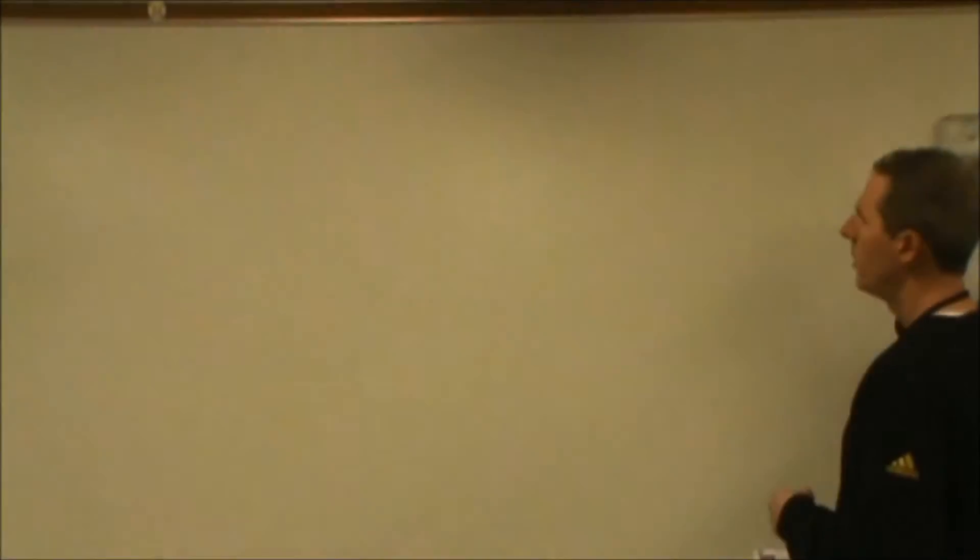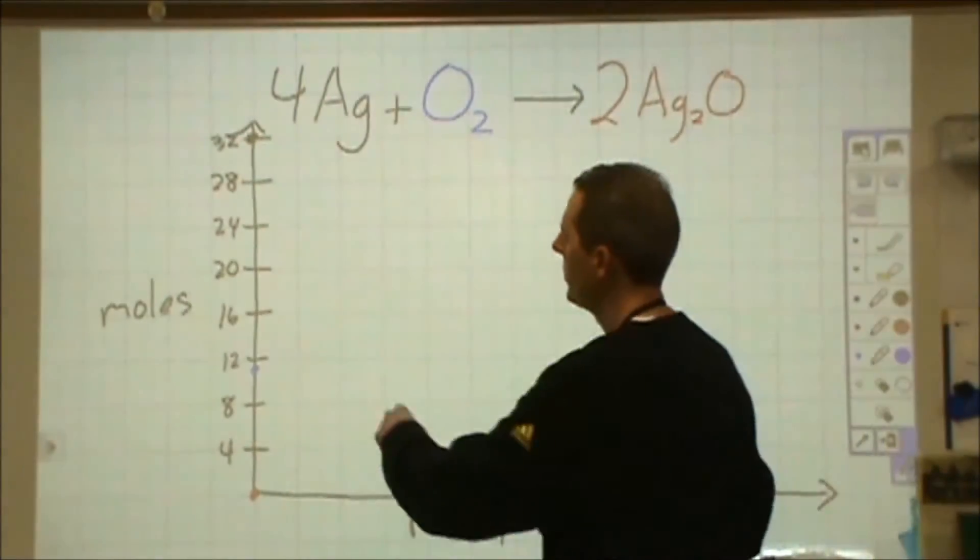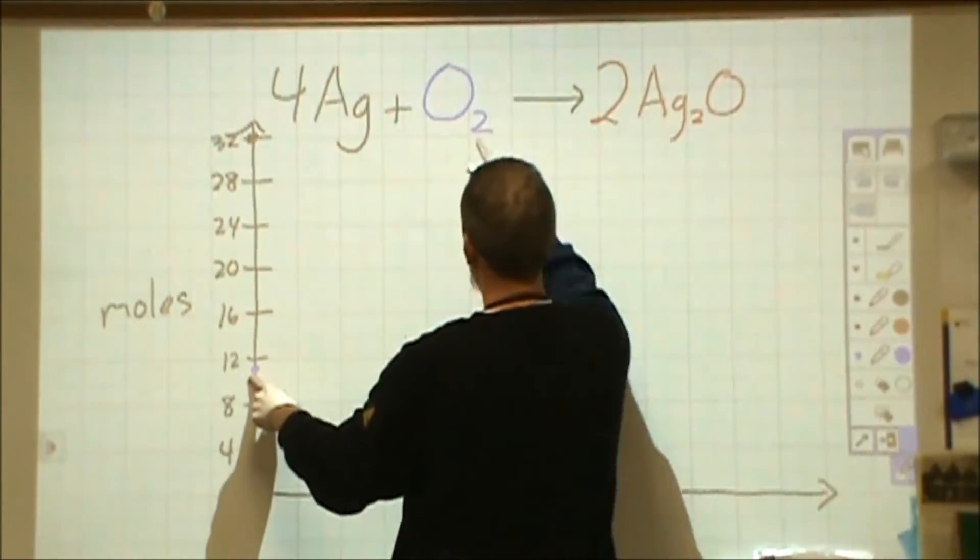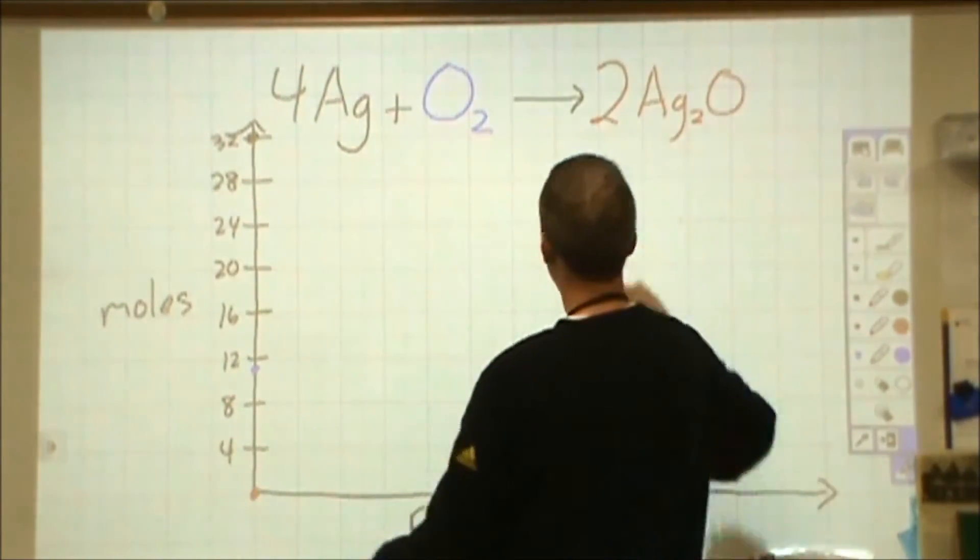So what we're going to do is we're going to look at 32 and 11 graphically, where we started with 32 silver and 11 oxygen and zero silver oxide.